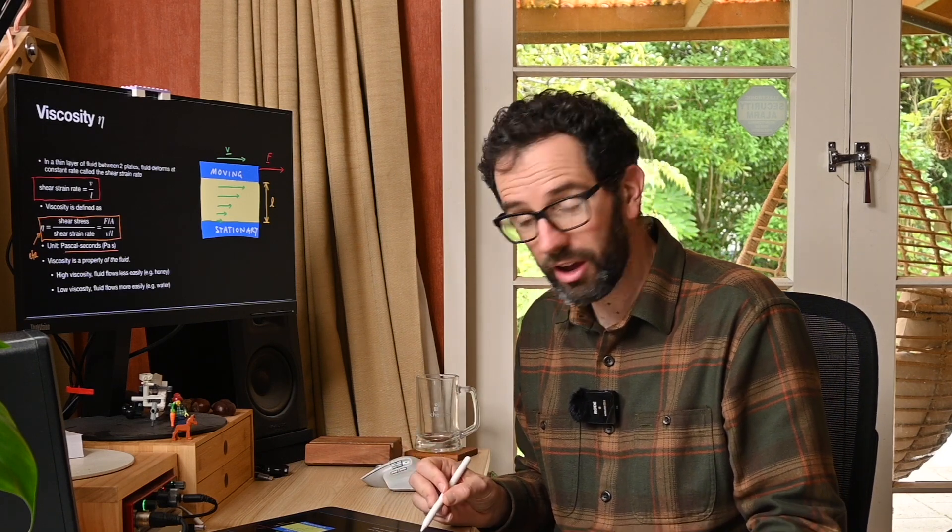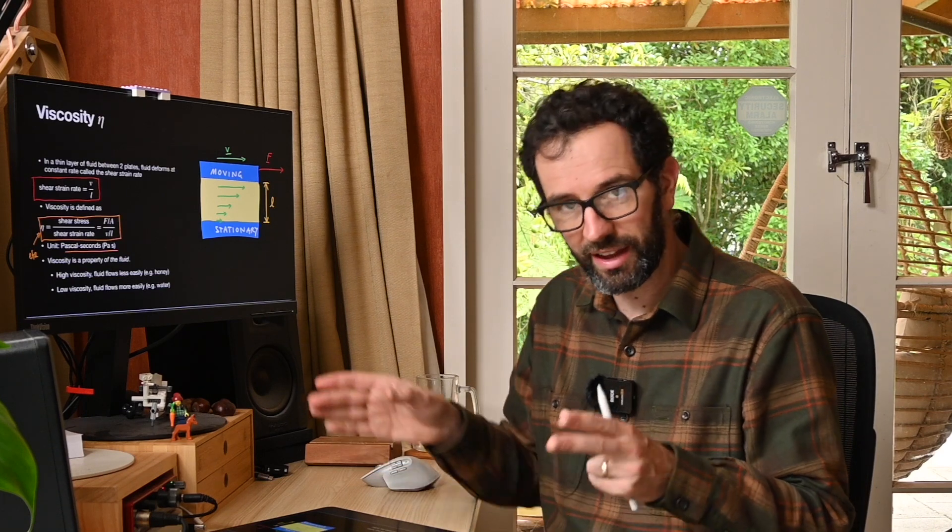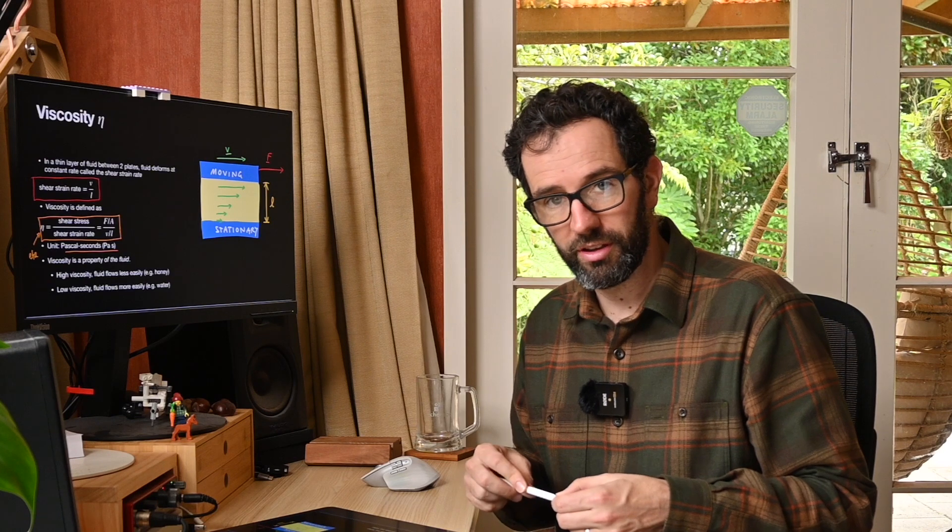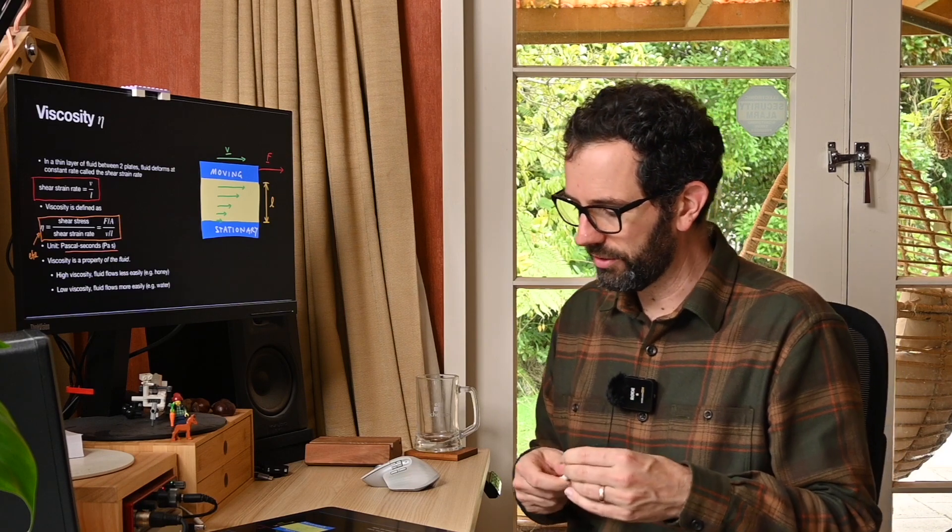If you've got a fluid with a high viscosity, that means that the fluid flows less easily. That's like the honey in the jar that we just talked about. If we have a fluid with low viscosity, then that's a fluid that flows very easily, for example, water. So it's a property of the fluid that we can kind of figure out.